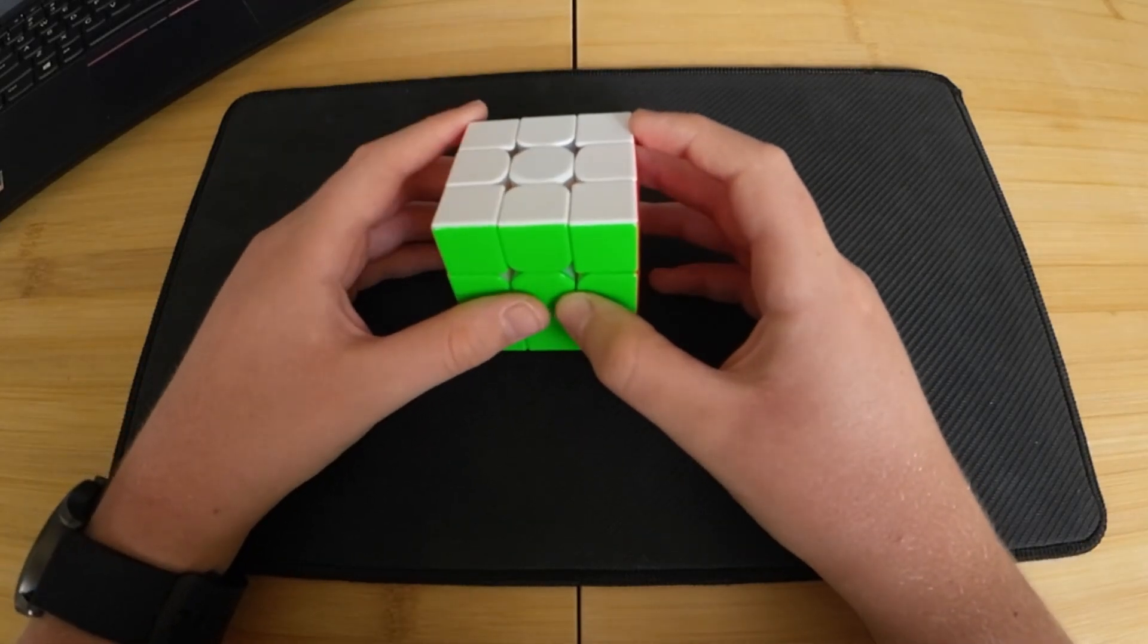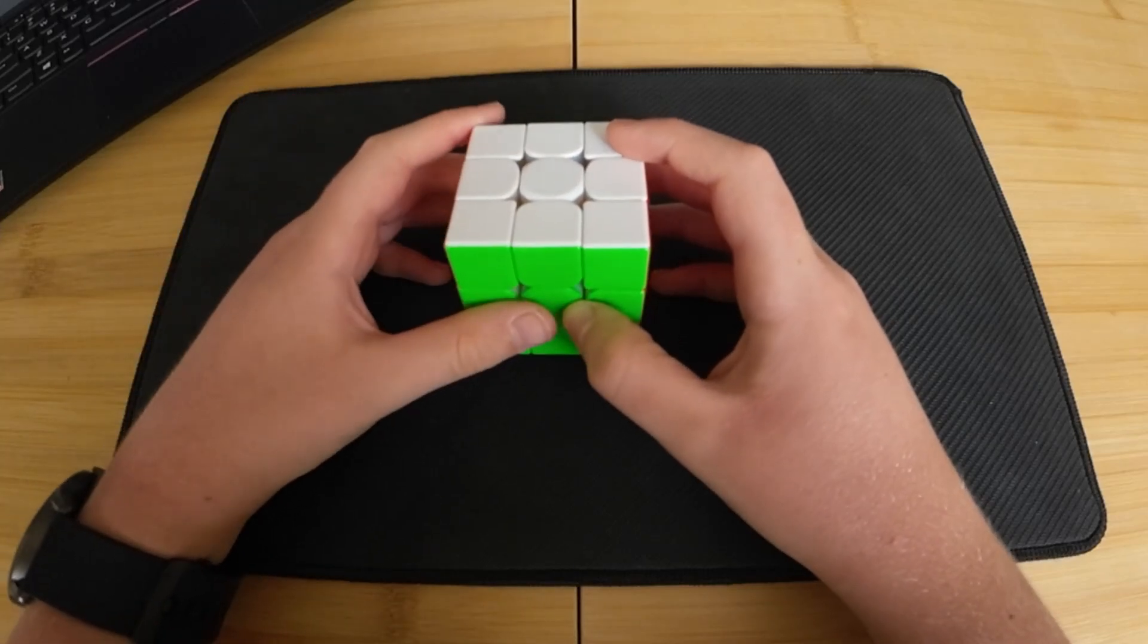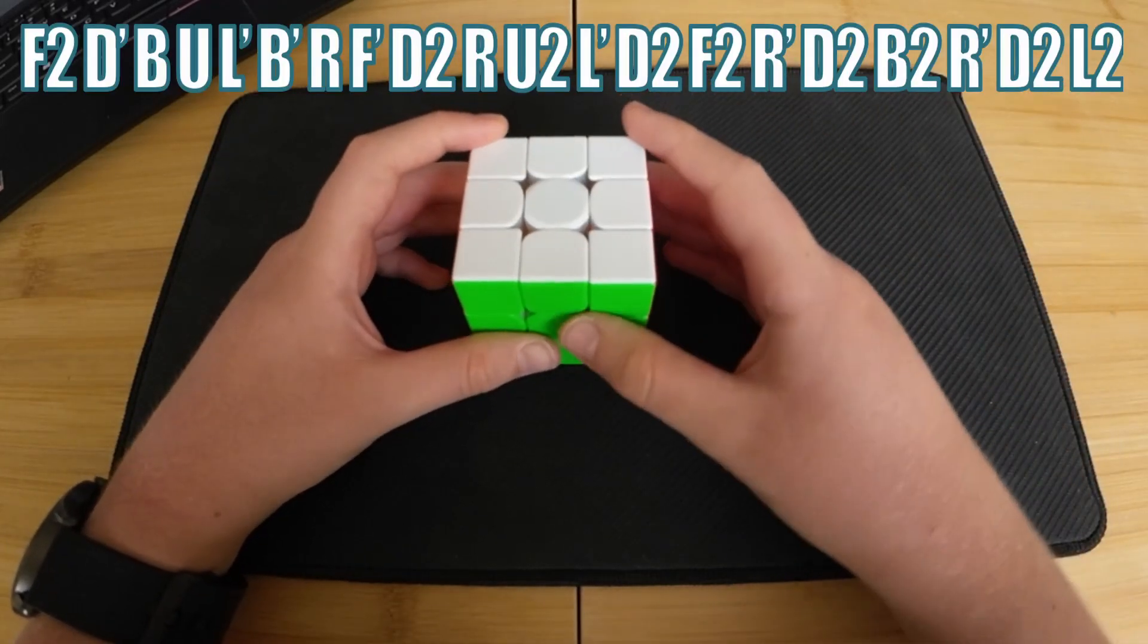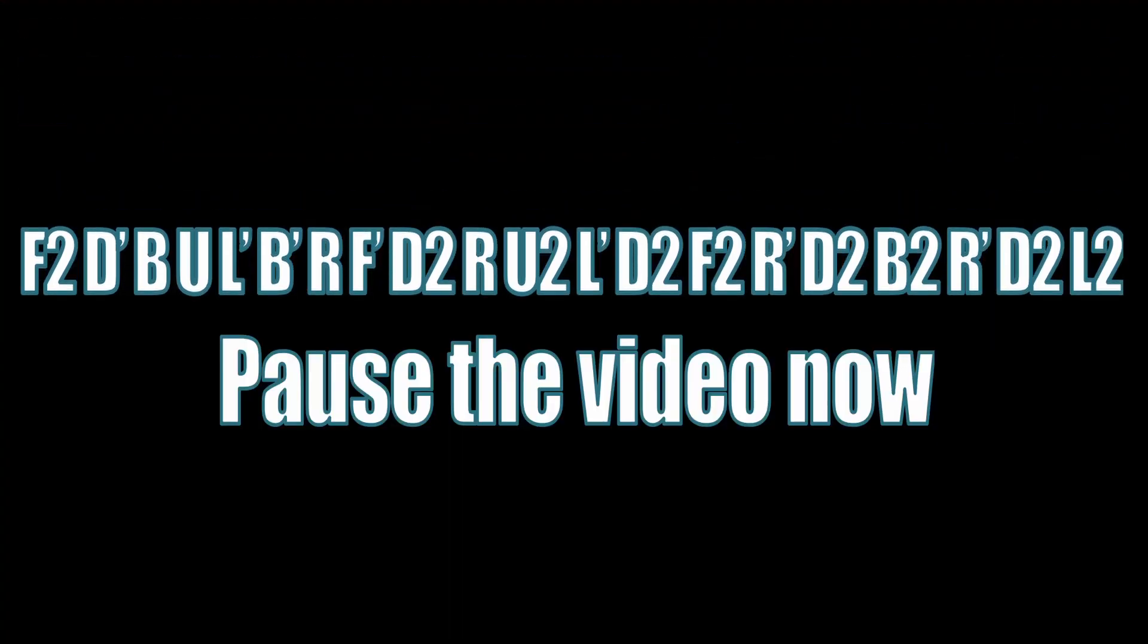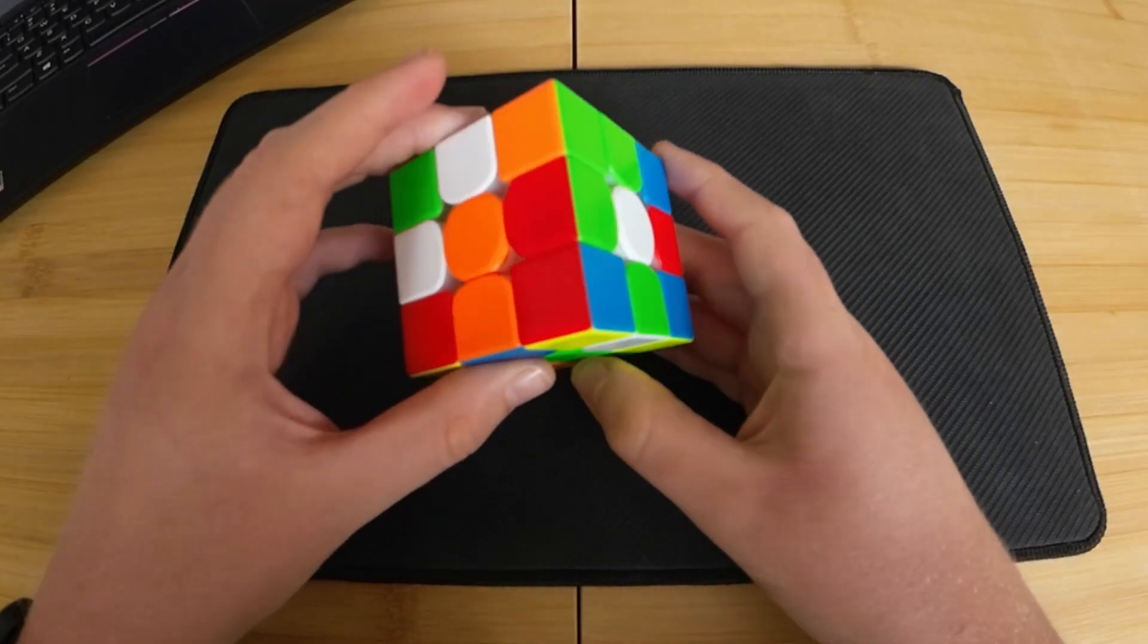If that was too fast, feel free to go back and slow the video down, and just do it at your own pace. Now pause the video and give this one a go by yourself. If you got the scramble right, then it should look something like this.